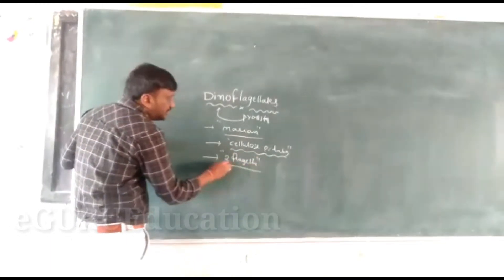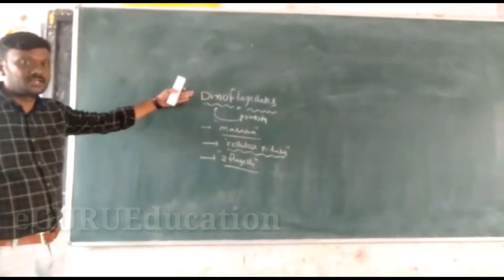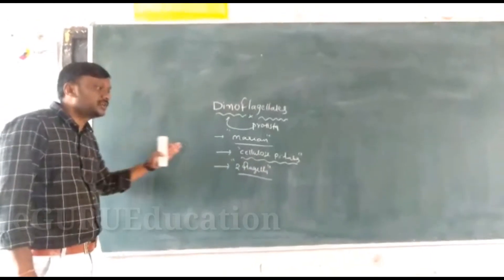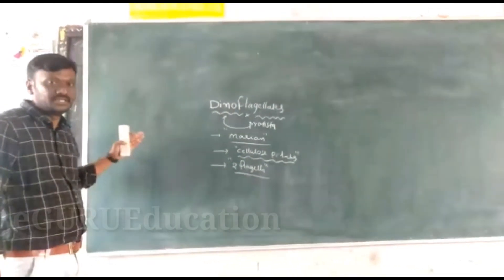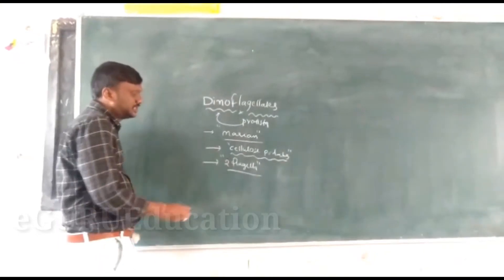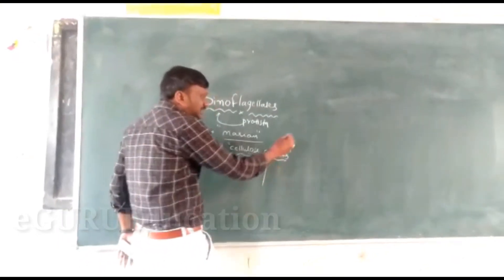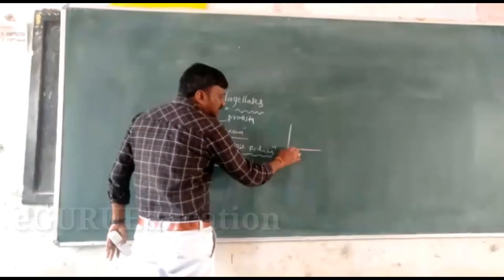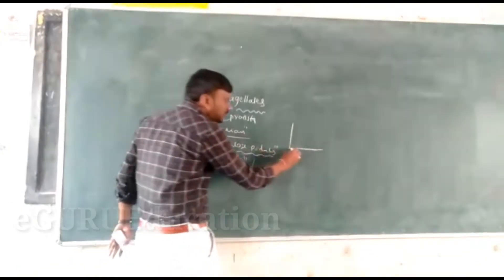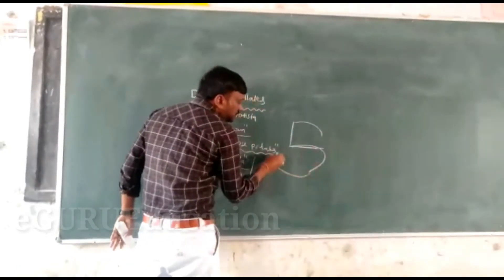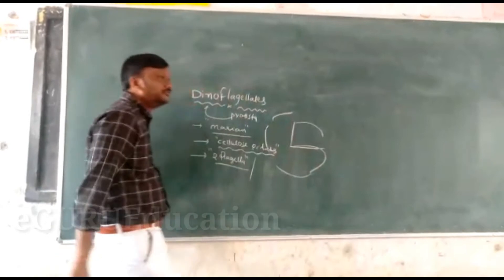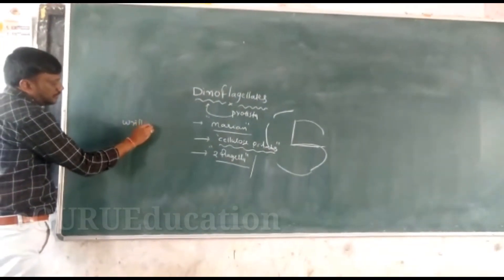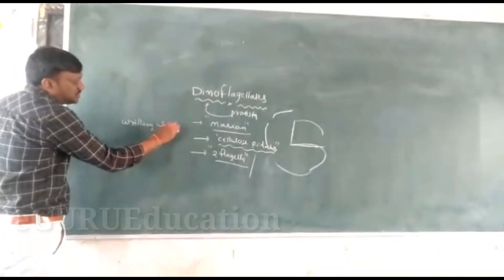Two flagella are present in dinoflagellates. These flagella are located in this organism — one is transverse and one is longitudinal. So these flagella are moving in a particular type of movement. This type of movement is called whirling.